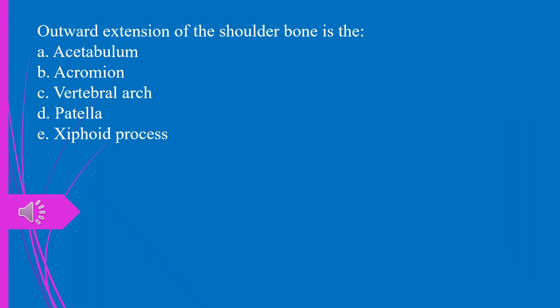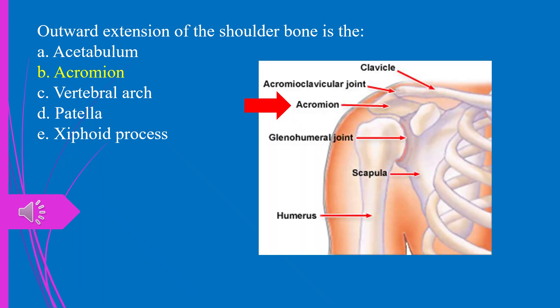Question 11. The outward extension of the shoulder bone is the: a) acetabulum, b) acromion, c) vertebral arch, d) patella, e) xiphoid process. The answer is b, acromion.